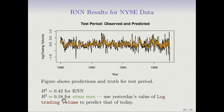One way of comparing that is an R squared of 0.18 for a straw man. The straw man we use is to predict today's log trading volume using yesterday's value — that should be pretty good because of the autocorrelation. So we don't expect the straw man to be useless, but it gets only an R squared of 0.18, and we can do considerably better using an RNN.